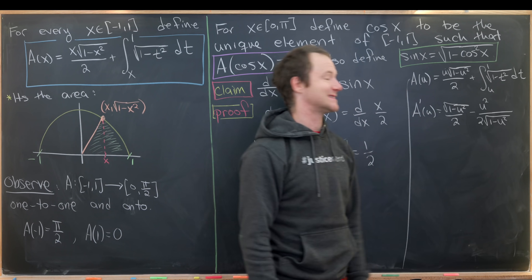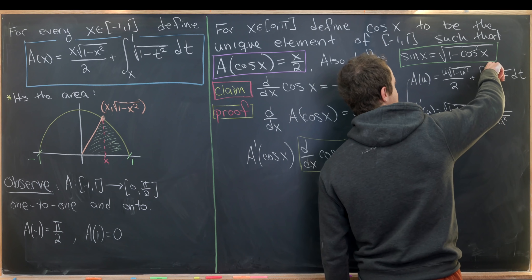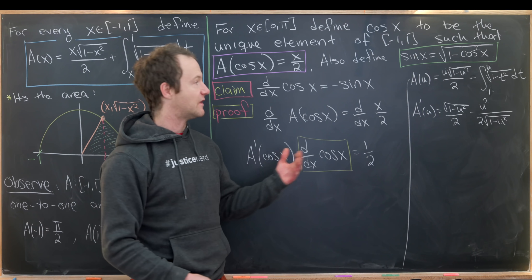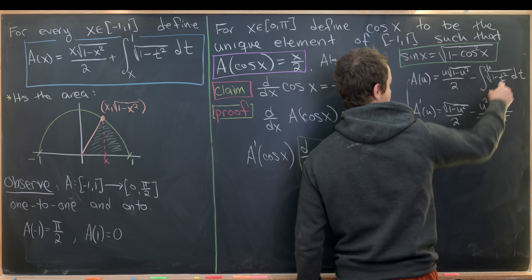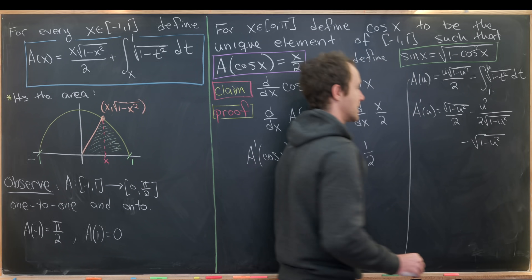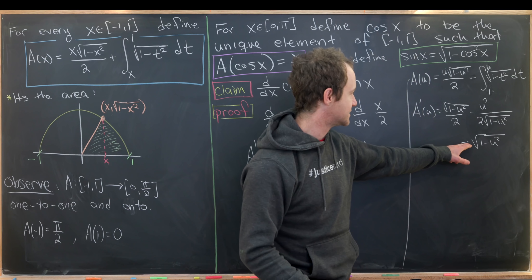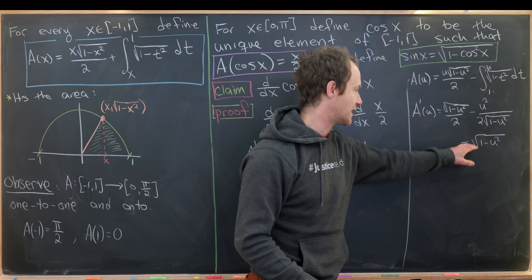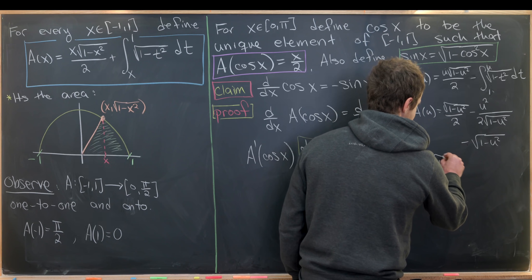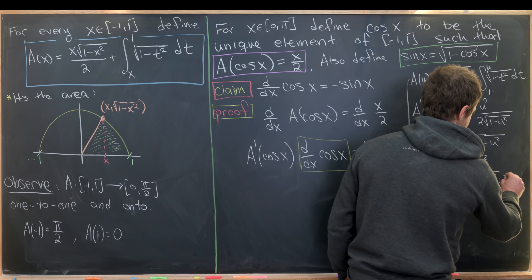For the integral term, since our variable is in the lower bound, we flip the bounds and change the sign, then apply the fundamental theorem of calculus to get minus sqrt(1 minus u squared). Combining with the half from the first term, we subtract a full one, leaving minus sqrt(1 minus u squared) over two, minus u squared over two times sqrt(1 minus u squared).